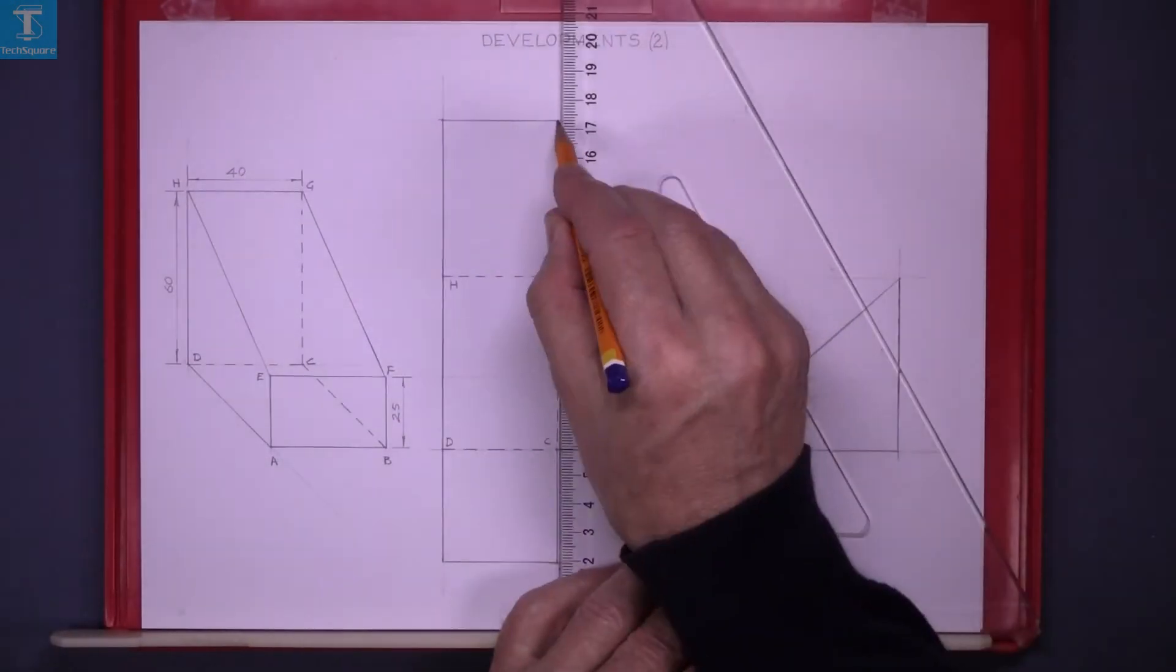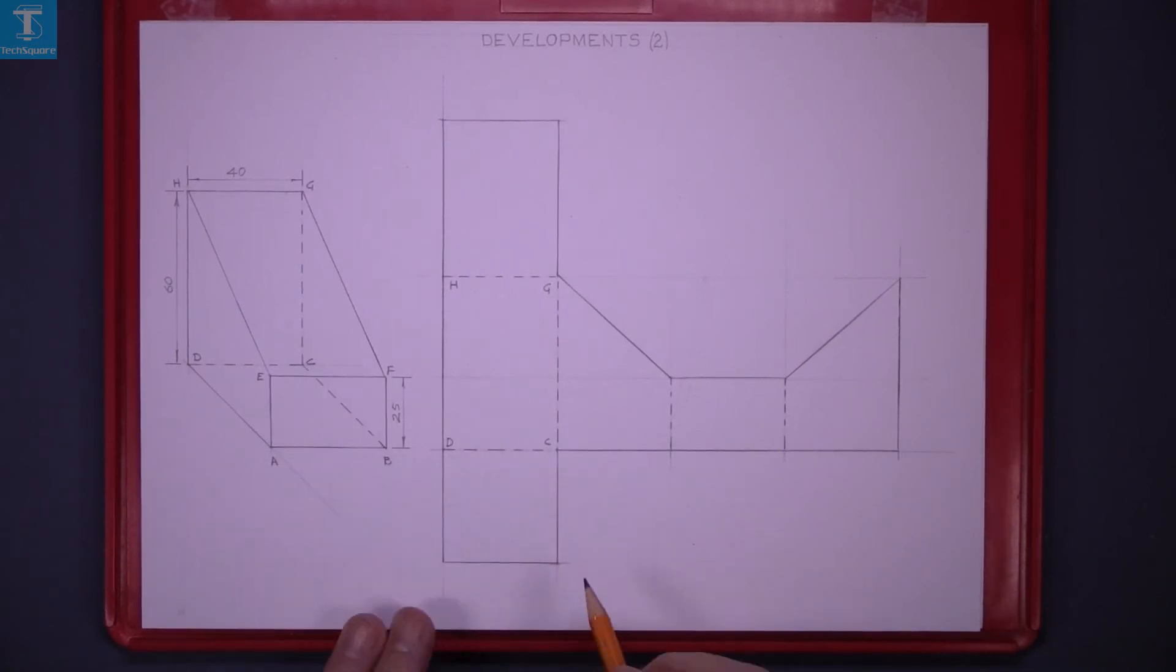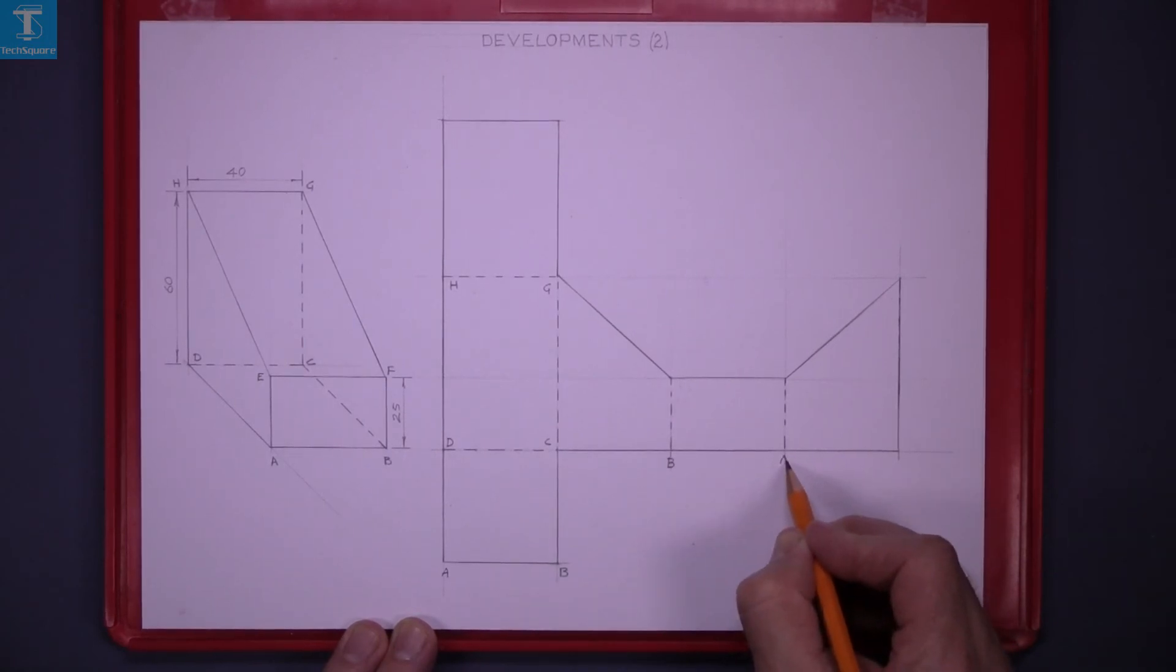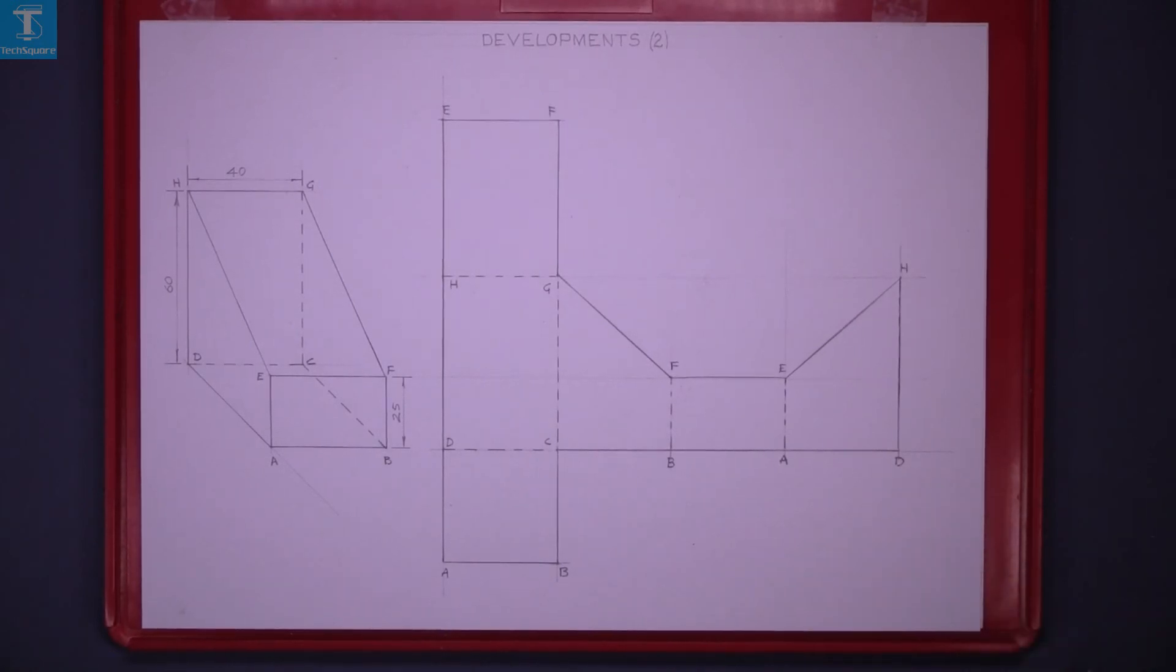Now that's the development complete. Now indexing: D and C are the back points, the outside point opposite C is B and A. This point will match up with B, so that's point B, A and D. And that's developments complete.